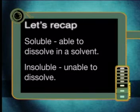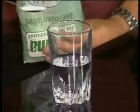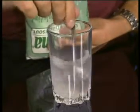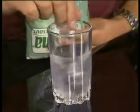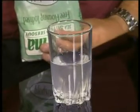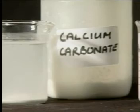A substance is soluble if it is able to dissolve in a solvent, and insoluble if it is unable to dissolve. When sodium chloride is added to water, the solute dissolves in the solvent to form a solution — sodium chloride is soluble in water. When calcium carbonate is added to water, it does not dissolve; therefore calcium carbonate is insoluble.